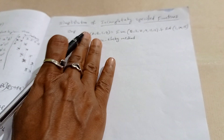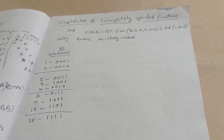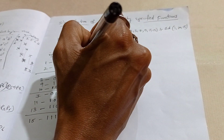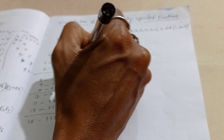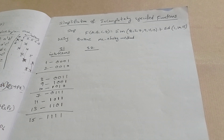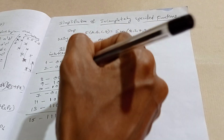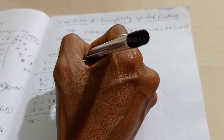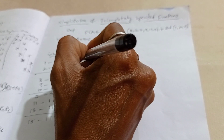Stage 2: Compare the two-group minterms and pair them. If there is only one bit change between two minterms, they can be combined.